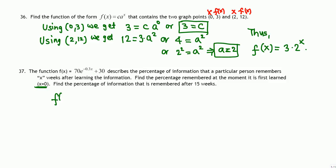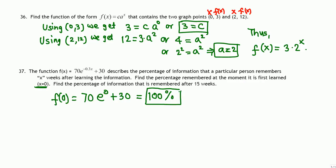Plugging in x = 0: f(0) = 70·e^(−0.3·0) + 30 = 70·e⁰ + 30 = 70·1 + 30 = 100. So the percentage remembered at the moment of first learning is 100%.